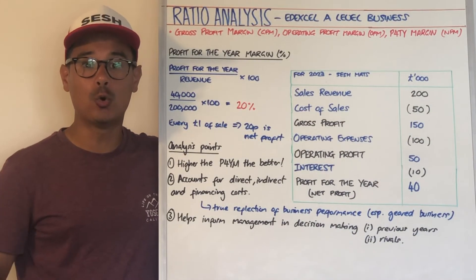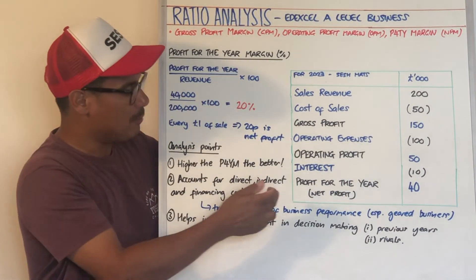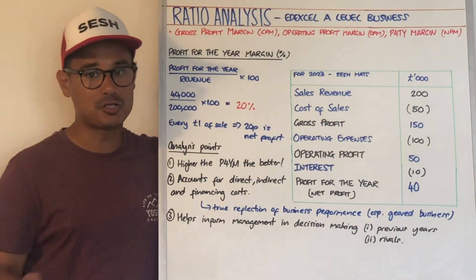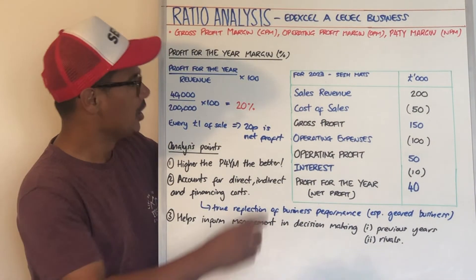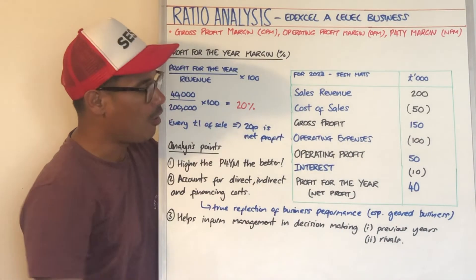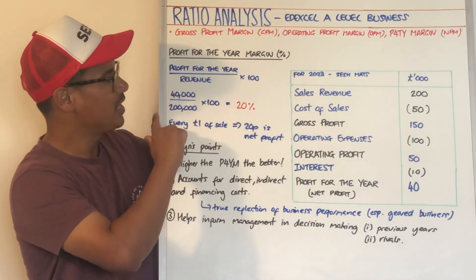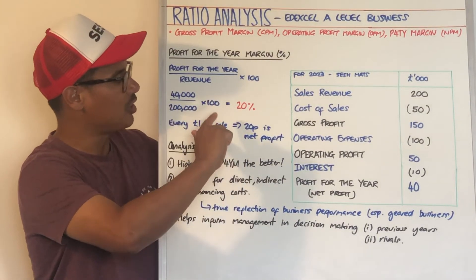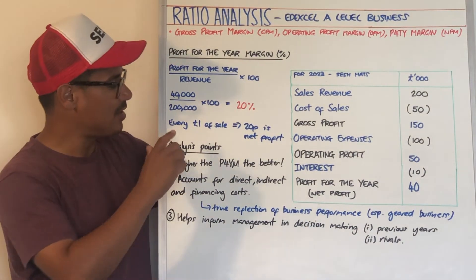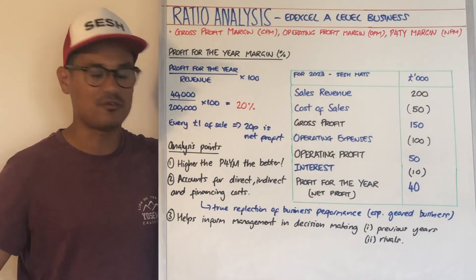For overall performance, you look at the profit for the year margin, which is the same as net profit margin. The formula is profit for the year (or net profit) divided by revenue, times by 100. You find profit for the year at the bottom of the statement of comprehensive income — that's £40,000. Divided by revenue of £200,000, times by 100, gives 20%. That means for every £1 of sales, 20 pence is net profit or profit for the year.